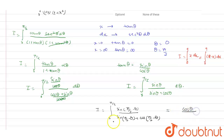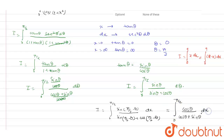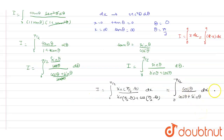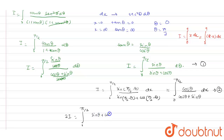Now sin(π/2 minus θ) equals cos θ, and cos(π/2 minus θ) equals sin θ. So the integral becomes integration from 0 to π/2 of cos θ upon (cos θ plus sin θ) dθ. This is equation 2, and the earlier result is equation 1. Adding both equations, 2I equals integration from 0 to π/2 of (sin θ plus cos θ) upon (sin θ plus cos θ) dθ.